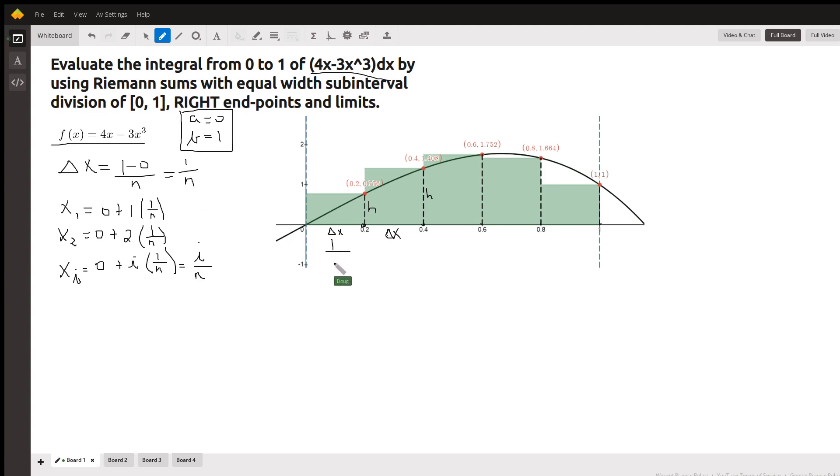So delta x is b minus a over n, or one over n. That's the width of each of these little rectangles if there's n rectangles. To calculate a formula for the right-hand endpoints, realize that if we start at zero and add on one width, we're at the first right-hand endpoint. If we add on two widths, we're at the second right-hand endpoint, and so on.